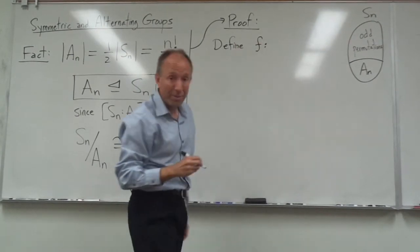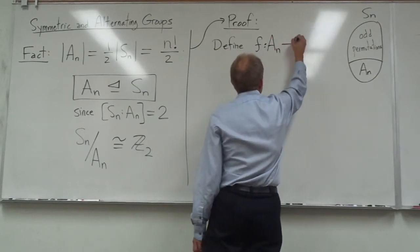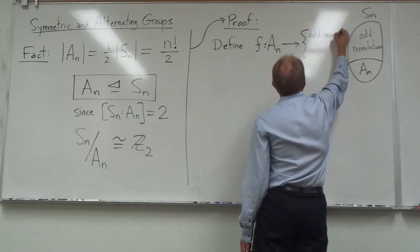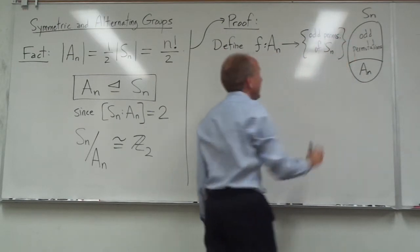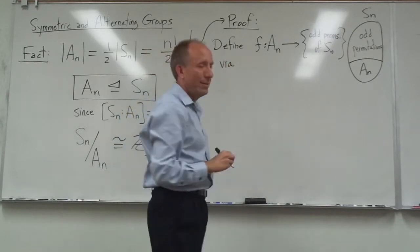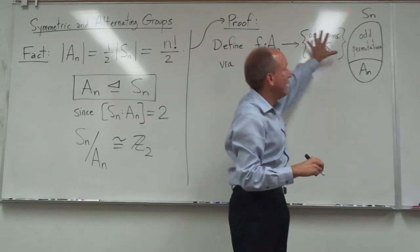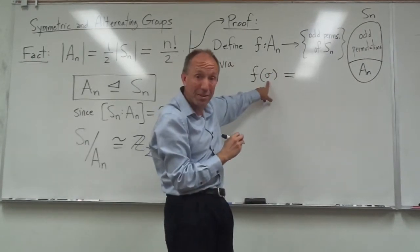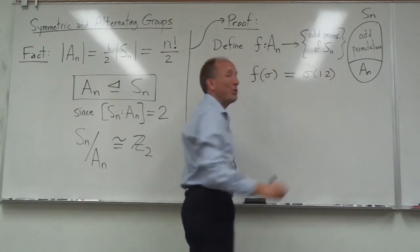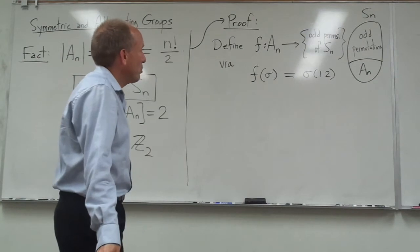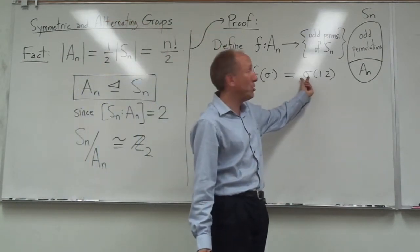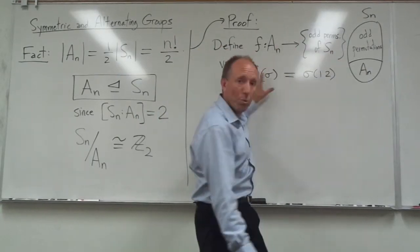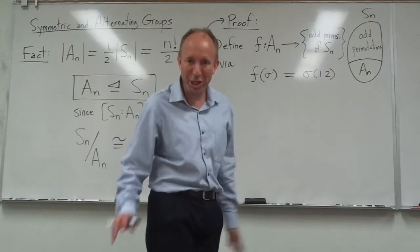What I'm going to do is I'm going to draw a picture over here. Here's Sn. Somewhere over here is An. And then somewhere else is the odd permutations. At the moment, I don't really know yet that An is half as big as the whole group Sn. So I don't really want to draw it that way to be misleading that I know that already. I have all the even permutations in An and the odd ones are outside of that. But take a look. I'm going to define a function.